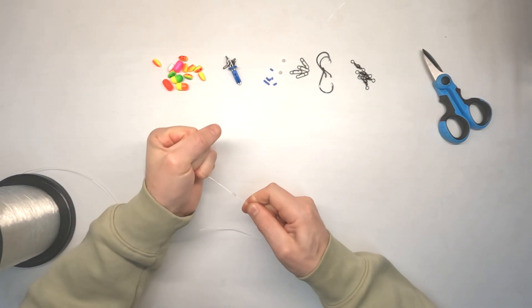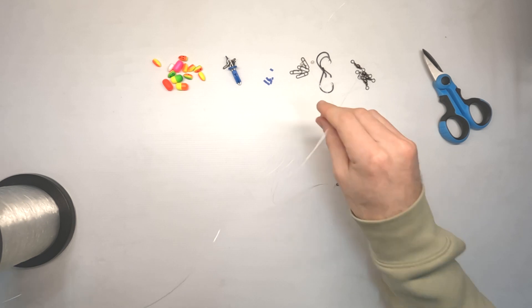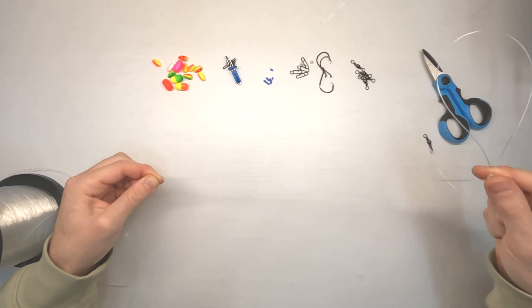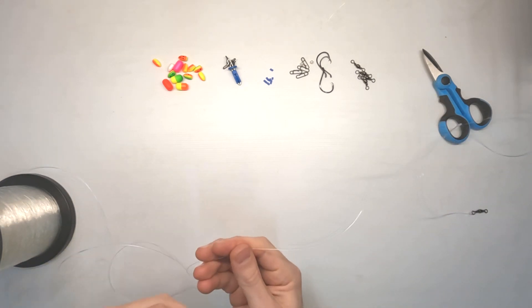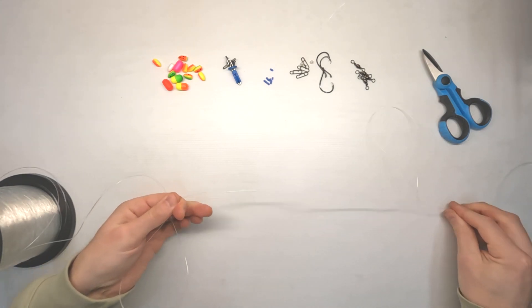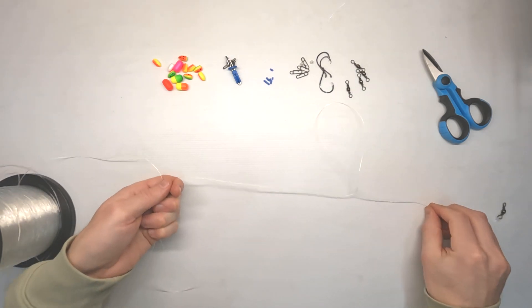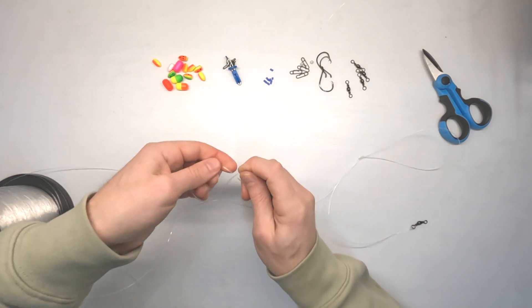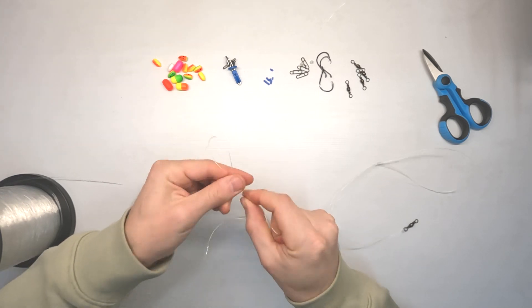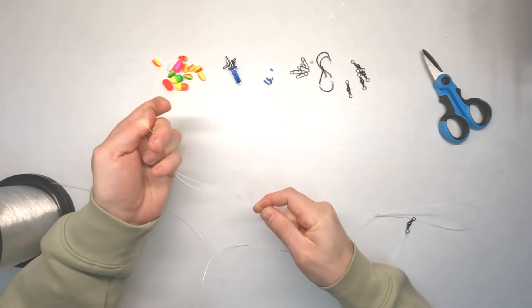So that's one loop there and then we're just going to come down about 200 odd and grab another loop like so. Again create another loop with that loop, go through there three times, draw that up under your fingers like so.